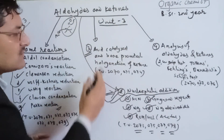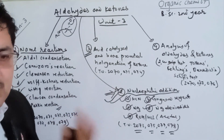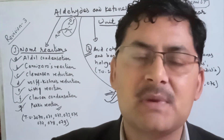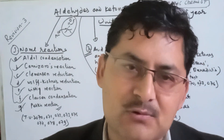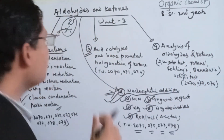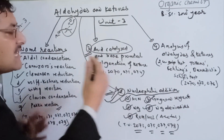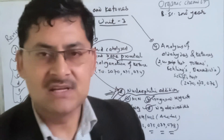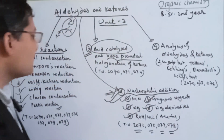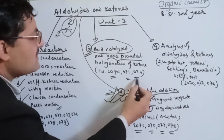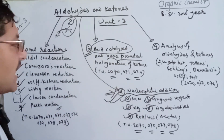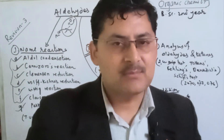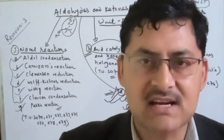In the third part, ketone halogenation is covered. Ketone will be replaced by bromine. There are two types of cases: acid-catalyzed and base-catalyzed halogenation. This is a popular reaction in the BSC chemistry course, and the playlist covers it in full detail.